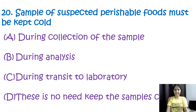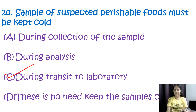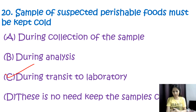Question number twenty: samples of suspected perishable foods must be kept cold — options are during collection of samples, during analysis, during transit to the laboratory, or there is no need to keep samples cold. The correct option is C, during transit to laboratory. Perishable food samples are prone to bacterial growth and spoilage if not stored properly. Keeping samples cold during transit helps slow down bacterial growth and preserves the integrity of samples until they reach the laboratory for analysis.